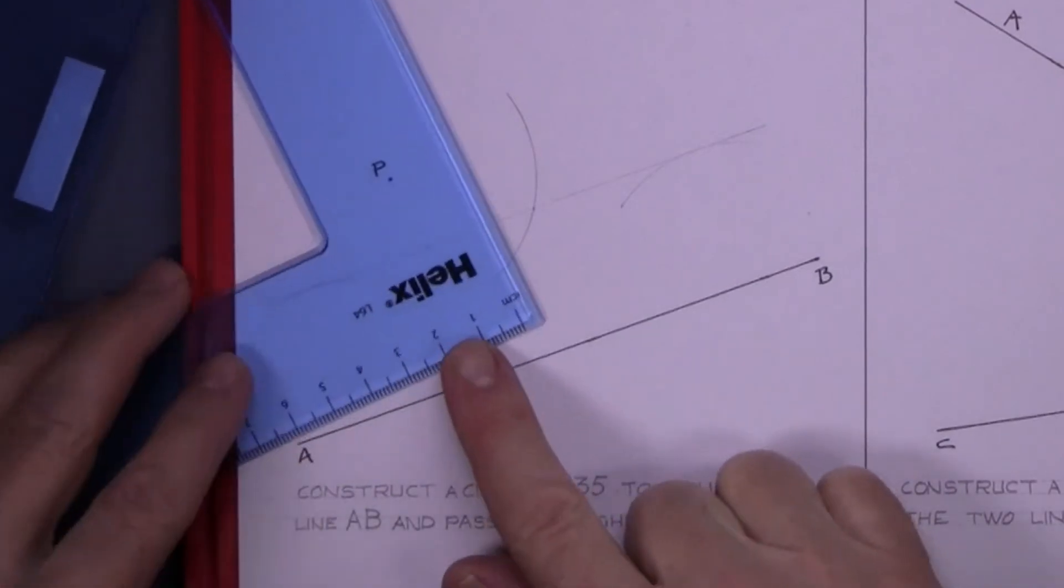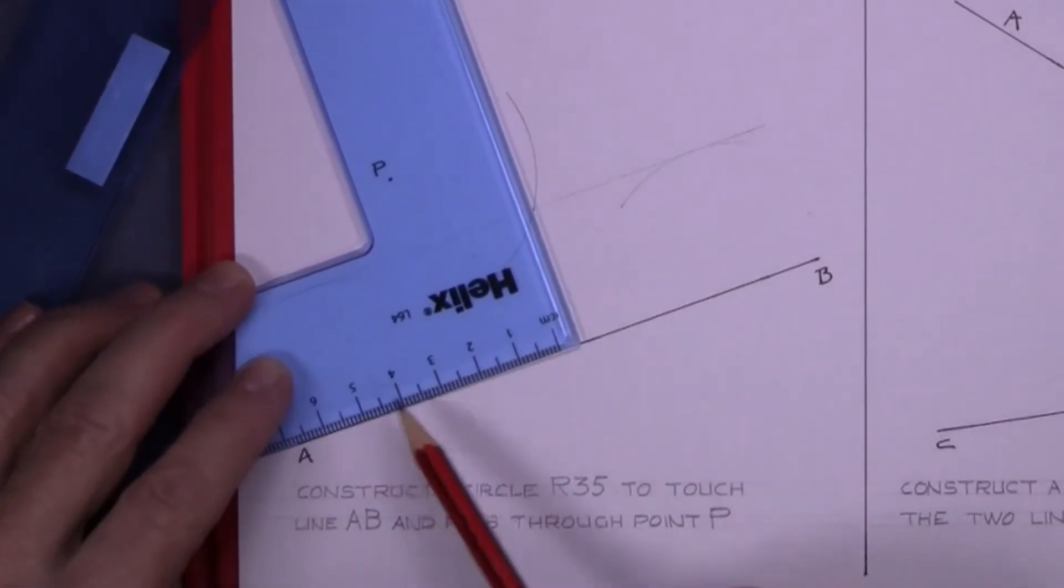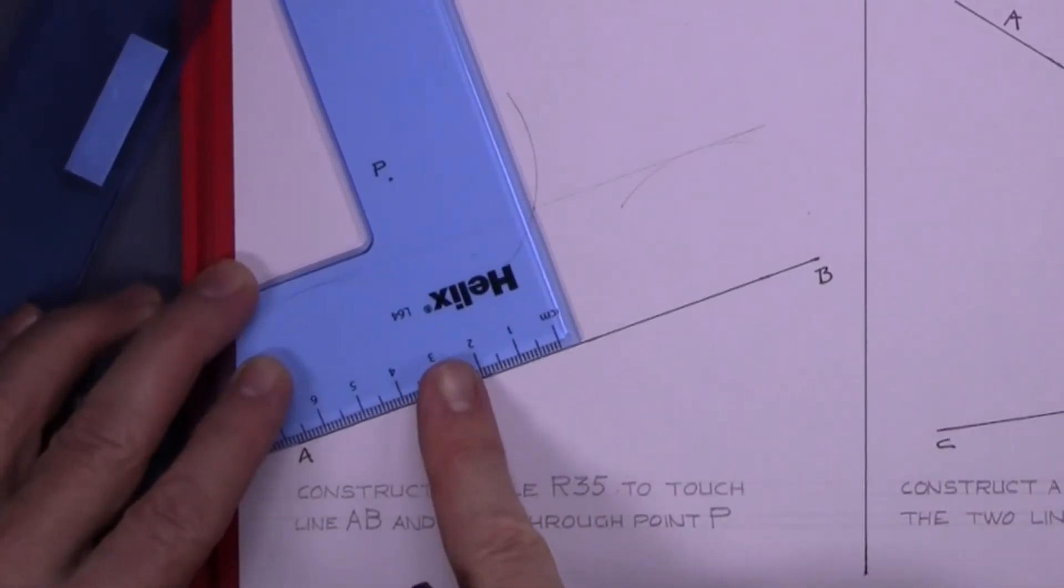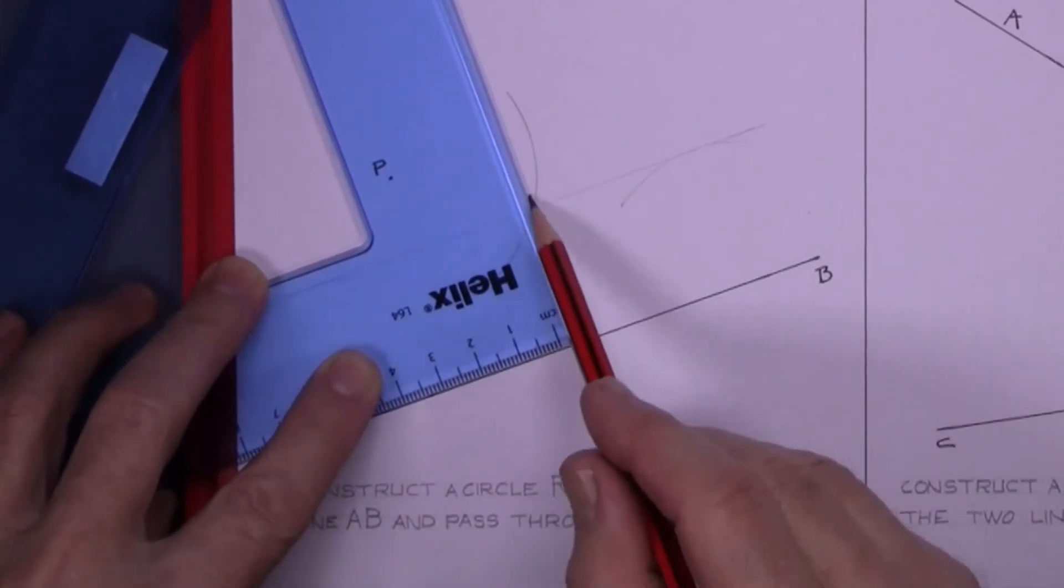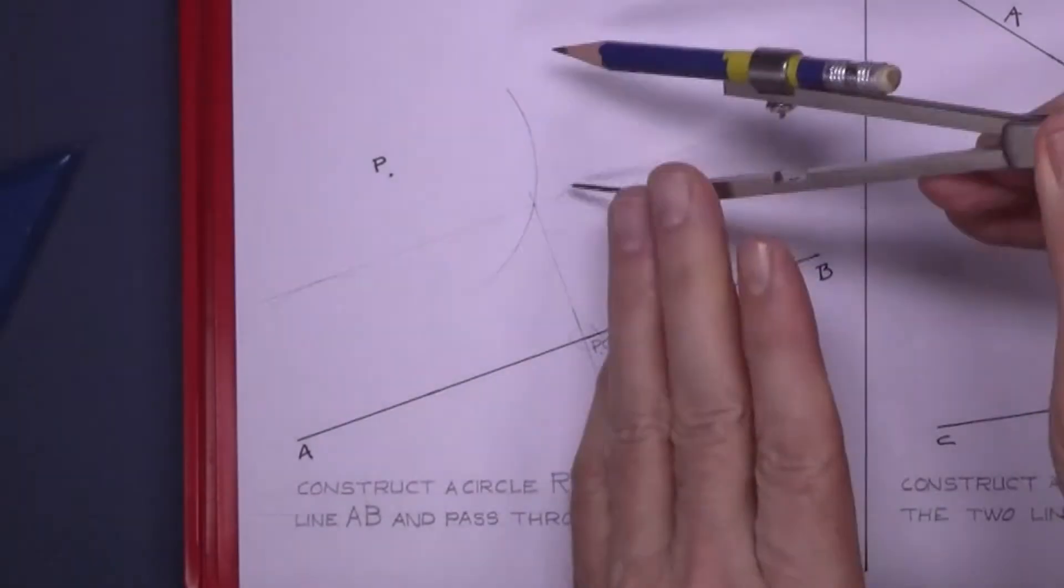Now we have to find the point of contact. The point of contact is on line AB but it's at 90 degrees from the center point. So using the set square here, we set up a 90 degree angle from the new center point, and that gets you the point of contact.